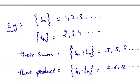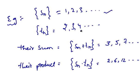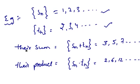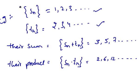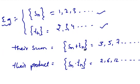For example, Sn equals 1, 2, 3, be a sequence, and Tn equals 2, 3, 4, be another sequence.